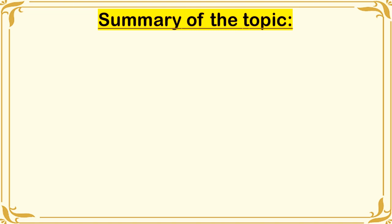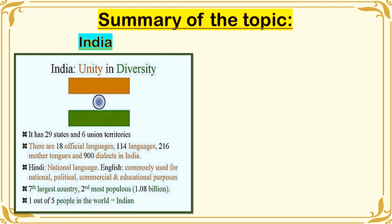To summarize the topics we have discussed: India is also known as the country of unity in diversity. It has 29 states and 6 union territories. Because India is one of the most populated countries in the world, they speak 18 official languages, but they also speak English because they were colonized by Great Britain. There are 114 languages, 216 mother tongues, and 900 dialects in India because it is a huge country. Hindi is the national language, and English is commonly used for national, political, commercial, and educational purposes. India is the seventh largest country and the second most populous country in the world, with 1.8 billion people — meaning one out of five people in the world is Indian.